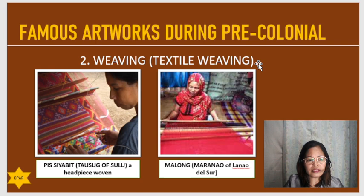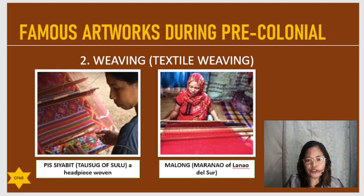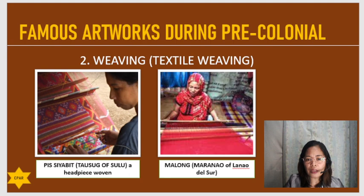The first famous artwork was carving. The second famous artwork during the pre-colonial period is weaving. We have here the textile weaving. The first picture speaks about the Pis Shabit of the Tausug of Sulu — this is a woven headpiece. In the second picture, we have the malung. Until now, Muslims are very well known and famous when we talk about malung, which is of the Maranao of Lanao del Sur.